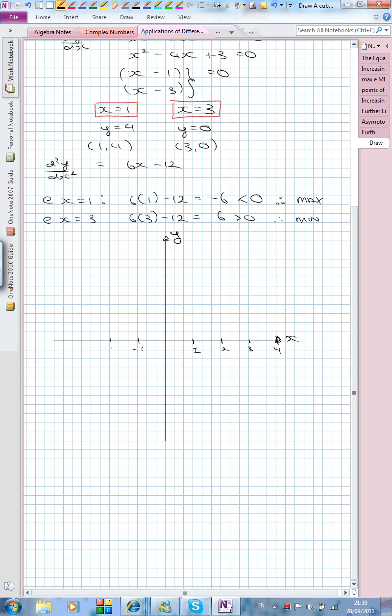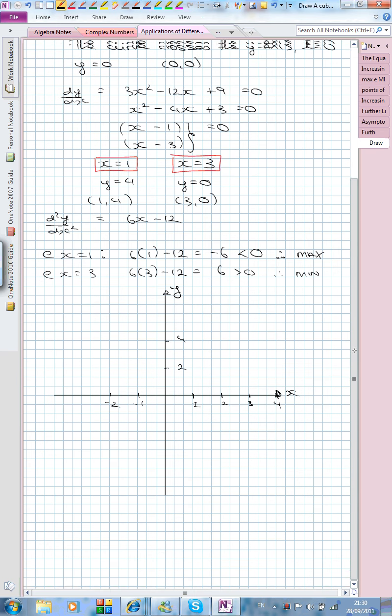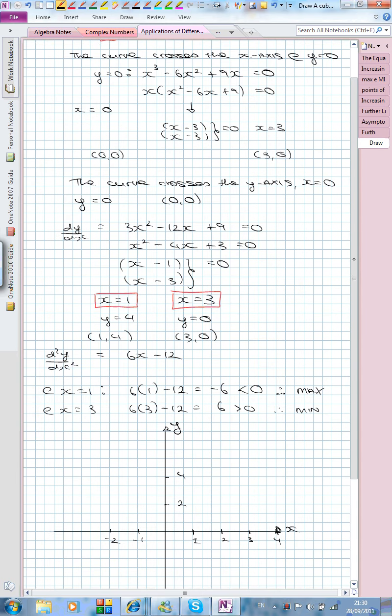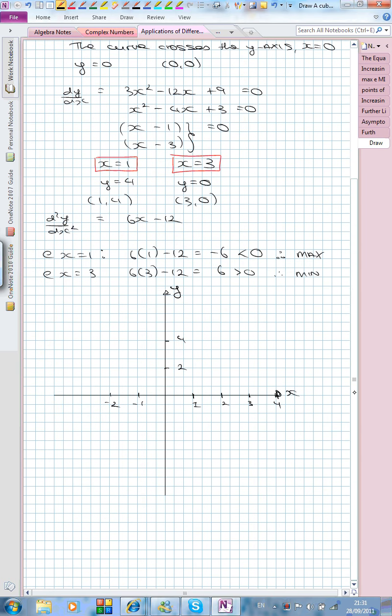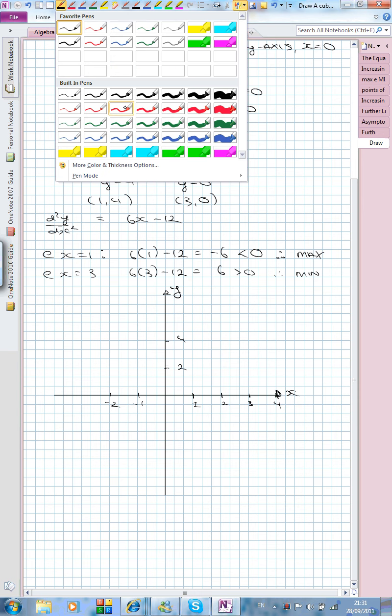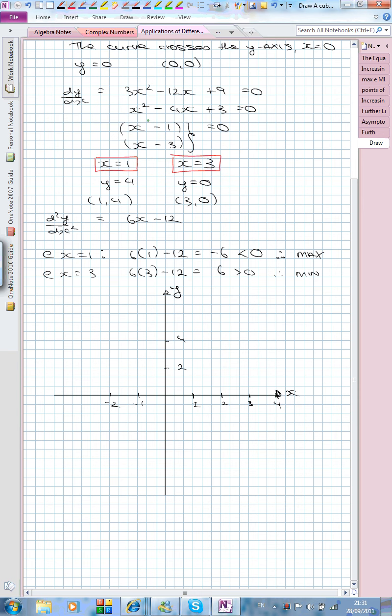So minus 1, minus 2, and I'll go up in 2s on this axis: 2 and 4. Let's just recap on what we have. Our curve crosses the x-axis at (0,0) and (3,0). Let's draw those in. I'll draw them in green. So we have (0,0) and we have (3,0). We have a maximum turning point at (1,4). Let's draw that in. And I have a minimum turning point at (3,0), which I've already sketched.